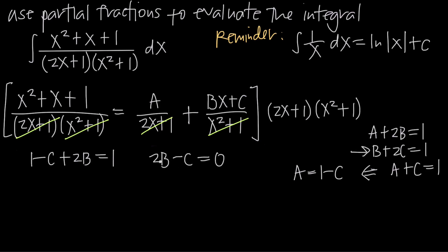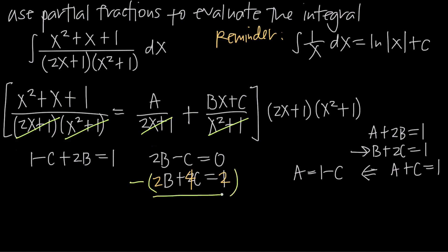We take our second equation, B plus 2C equals 1, and pair it with 2B minus C equals 0. We multiply the second equation through by 2 to get 2B plus 4C equals 2, so that when we subtract one equation from the other, the 2B terms cancel. Subtracting gives negative C minus 4C equals negative 5C, and 0 minus 2 equals negative 2. Dividing both sides by negative 5, we get C equals negative 2 over negative 5, which simplifies to positive 2 fifths.